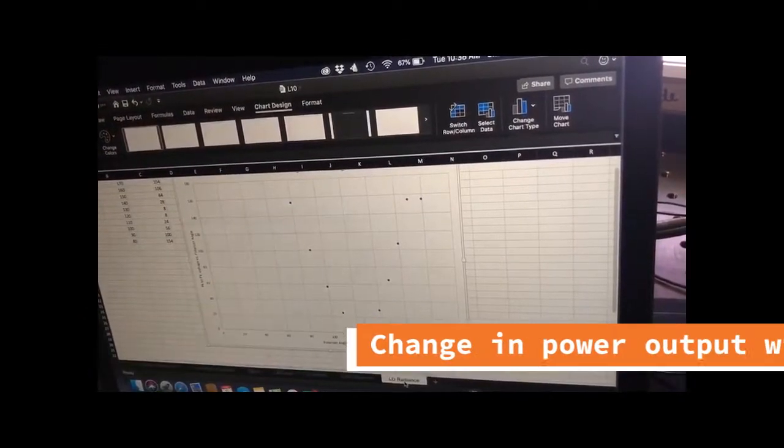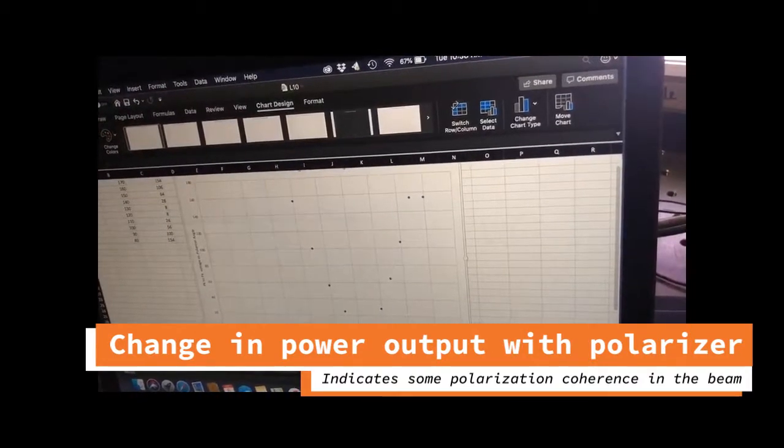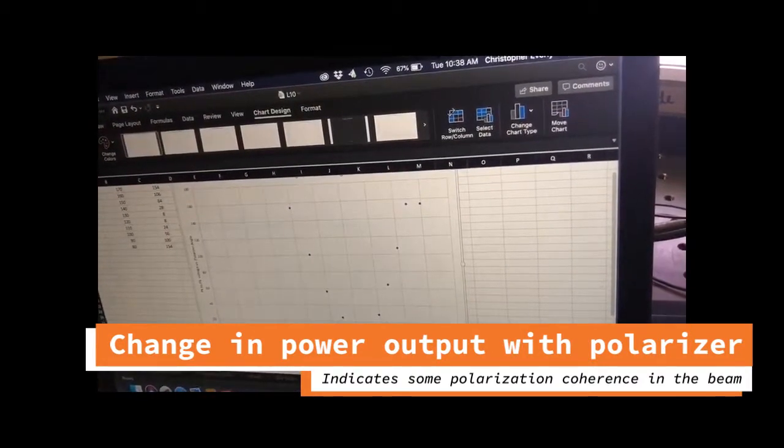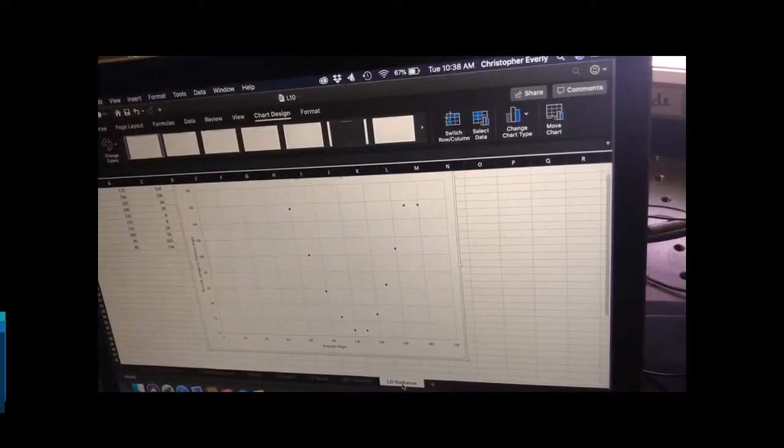But with the laser diode, when we changed the polarizer angle, there was a cosine squared relation that indicated the output was polarized.